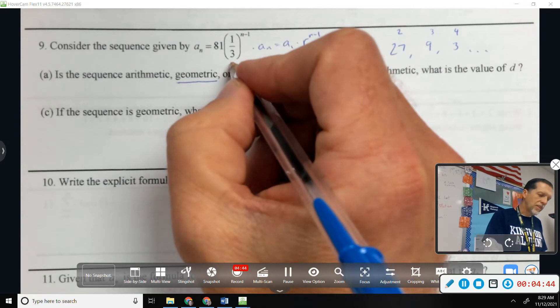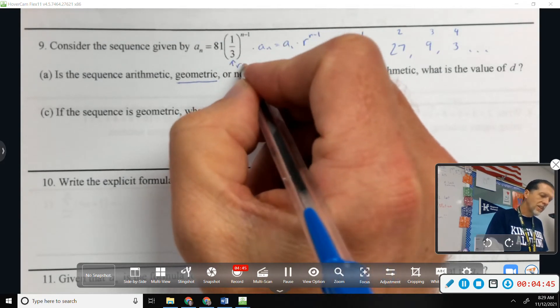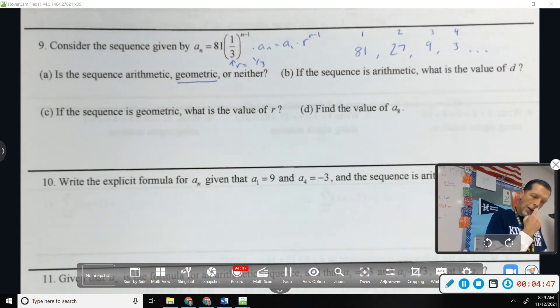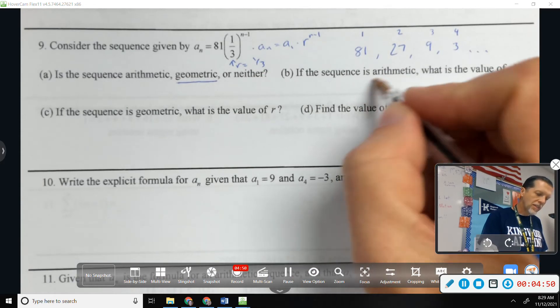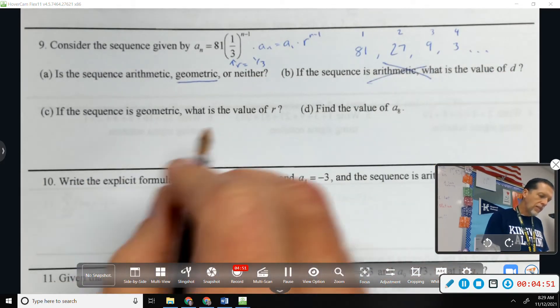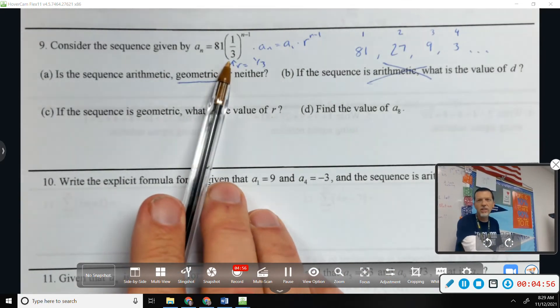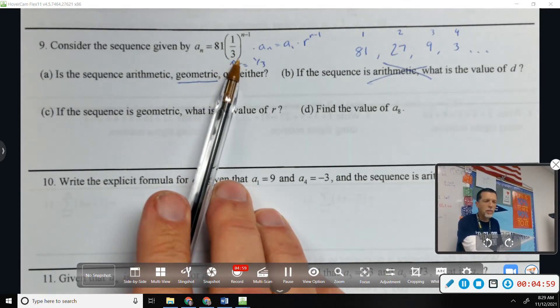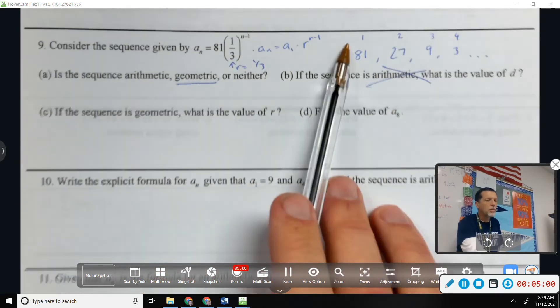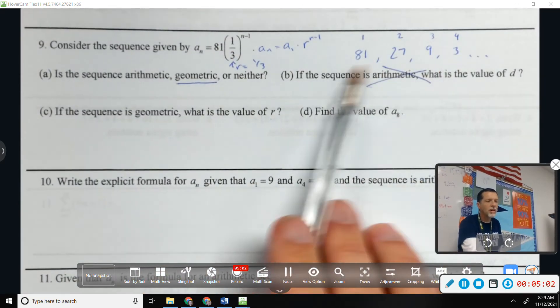And you start to realize that we're multiplying by a third each time. Which, that makes sense because there's r right there. If the sequence is arithmetic, it's not, so we throw that out. If the sequence is geometric, what's r? Again, some people can locate r just looking at the equation. One third.